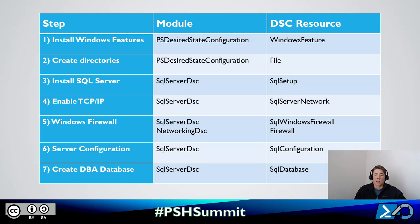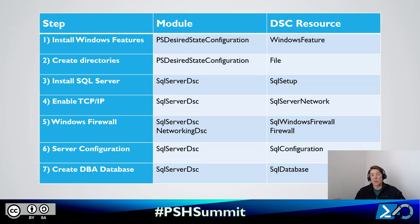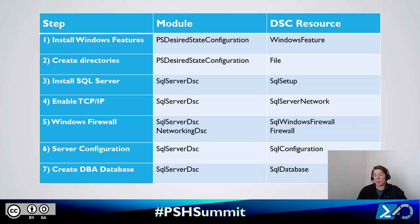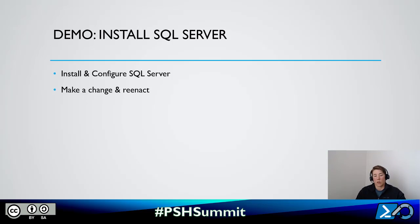I need to map that checklist to DSC resources. For installing Windows features and creating directories, we use the built-in resources from PSDesiredStateConfiguration: WindowsFeature and File. To install SQL Server, I'll bring in the SqlServerDsc module for the SqlSetup resource. For enabling the firewall, I can either use SqlServerDsc's SqlWindowsFirewall resource — which specifically configures the firewall for SQL Server — or the NetworkingDsc Firewall resource, which gives much more granular control. Finally, for configuration settings and the database, there are resources for those too.